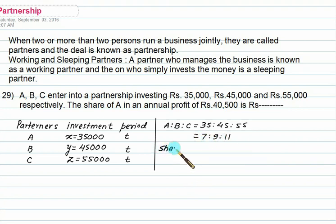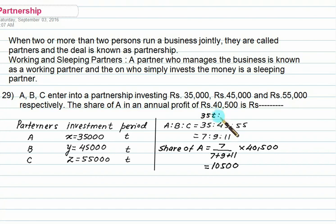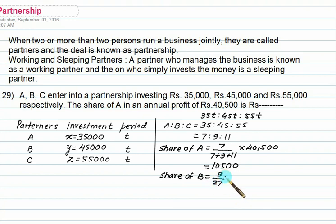Depending on their investment, they have a share in the profit. Share of A is 7 divided by (7+9+11) multiplied by total profit 40,500, which comes out to 10,500. You calculate investment multiplied by period to get the ratio of profit share. Share of B is 9 divided by 27 multiplied by 40,500, which comes out to 13,500.